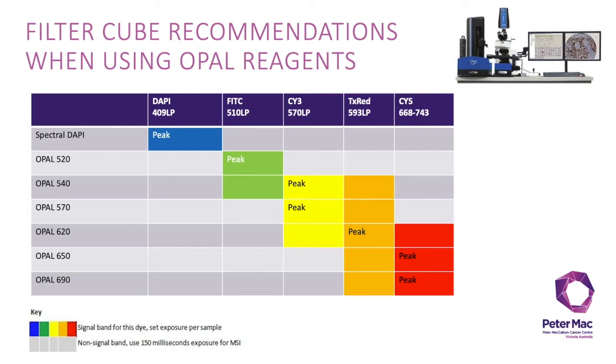However, if you are using opal 570, you must auto expose in both Cy3 and Texas red filters. Similarly, with opal 690, you need to auto expose using the Texas red and Cy5 filters. If you are imaging a seven plex slide, you must auto expose using all five epi cube filters.